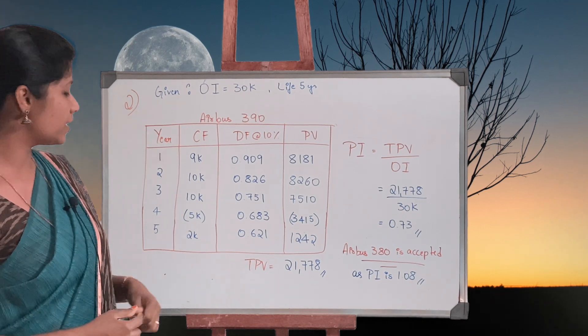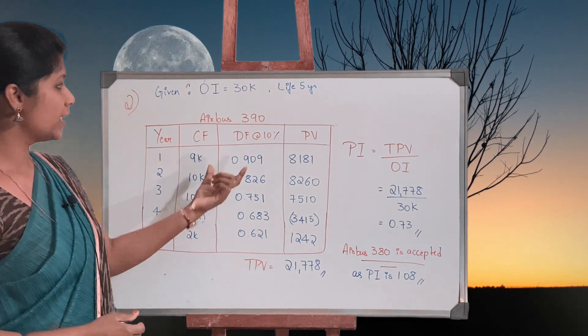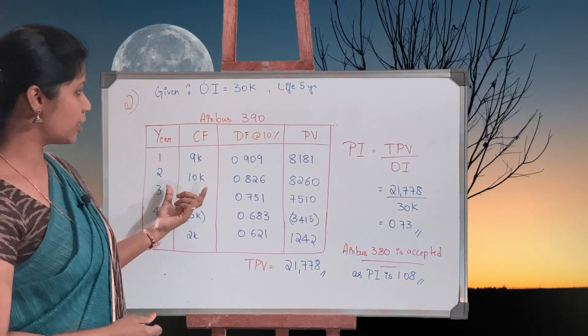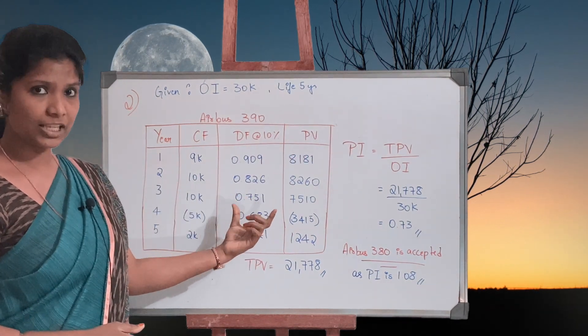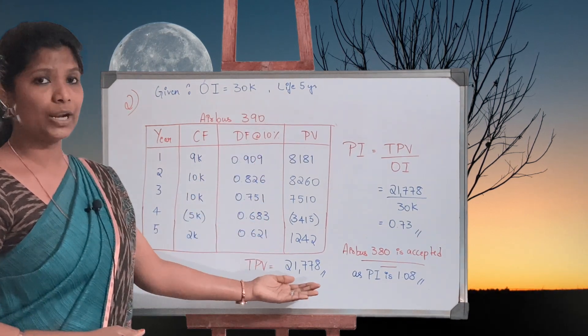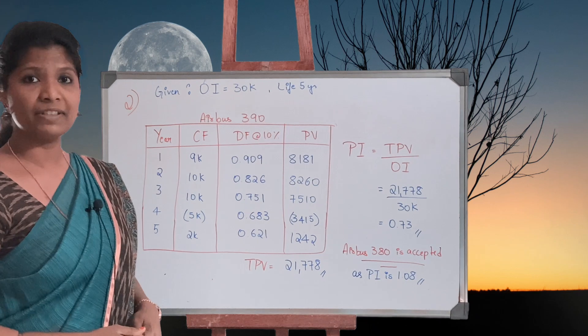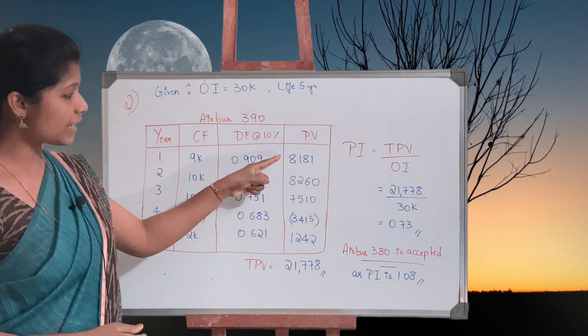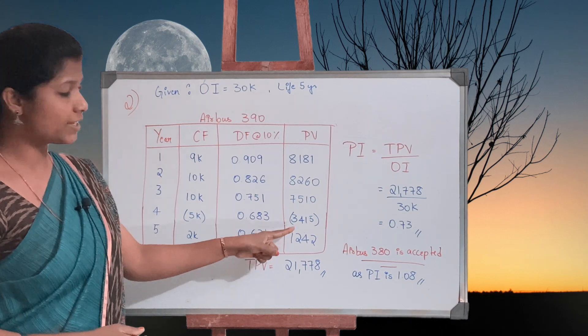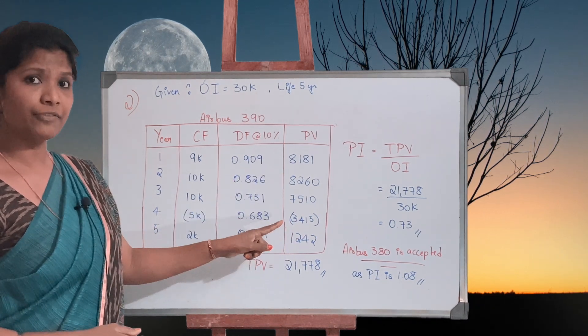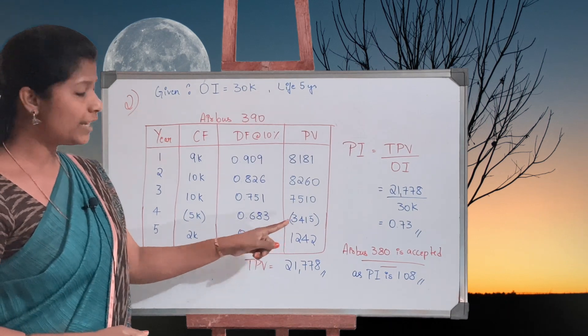Discount factor at 10 percent and the present value - this is multiplication of cash flow into my discount factor. Once I total it up, I arrive at total present value 21,778. While totaling it up, please remember first add all the positive values, then deduct 3,450. That's when you will arrive at 21,778.